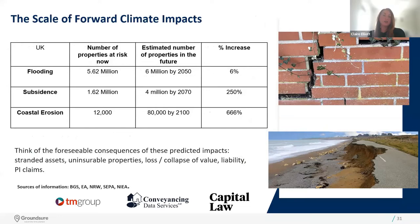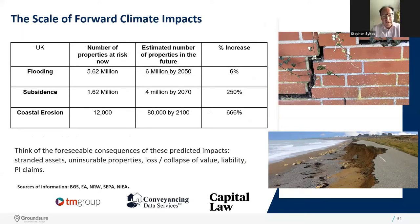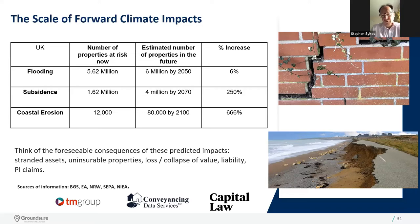So the scale of forward climate impacts — where are we at with that? I put some numbers together here because it concentrates the mind. If you take the flood risk number — this is a UK-wide number from the EA, SEPA, NIEA and NRW — it's 5.62 million right now. Roll forward just under 30 years and we're at 6 million. So another 400,000 properties are going to be at risk. It's only a 6% increase, but it means close to one in four property transactions are going to involve properties that have a one-in-100-year event chance of flood risk.